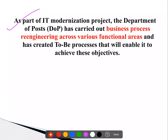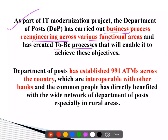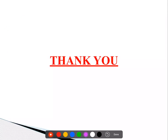Department of Posts has carried out business process re-engineering across functional areas, and has created streamlined processes ताकि ये objectives achieve हो सकें. Department of Posts has already established 991 ATMs, which are interoperable with other banks, and the common people can directly benefit through the wide network of the Department of Posts, especially in rural areas. तो ये जो rural areas में already post offices का infrastructure है, just that अगर हम उसको IT modernization carry out कर दें, so benefits वो multiply हो जाएंगे many fold. So this is all about the Darpan project, thank you so much.